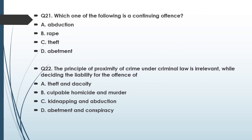Question number twenty-one: Which one of the following is a continuing offense? Option A: abduction, option B: rape, option C: theft, option D: abatement. Abduction is a continuing offense — option A is the correct answer. Abduction is continuing so long as the abducted person is moved from one place to another. It does not end when a person is moved from a particular place; rather, it continues with every movement from one place to another. Refer to the section on abduction for this question.